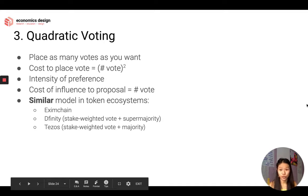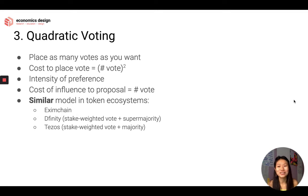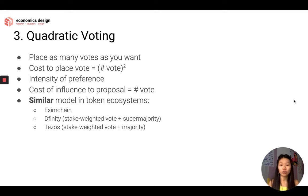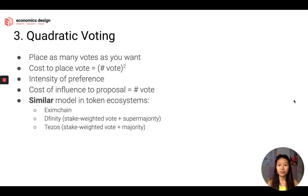The next solution is quadratic voting. You can talk about intensity of vote — I can place as many votes as I want. The cost to place the vote is the square of the number of votes. So if I want to place 10 votes, the cost is 100. If I want to place 20 votes, the cost is 400. If I just want one vote, the cost is 1.